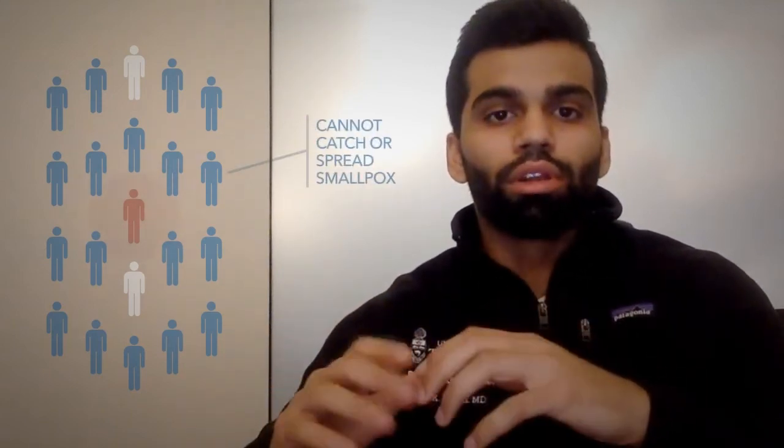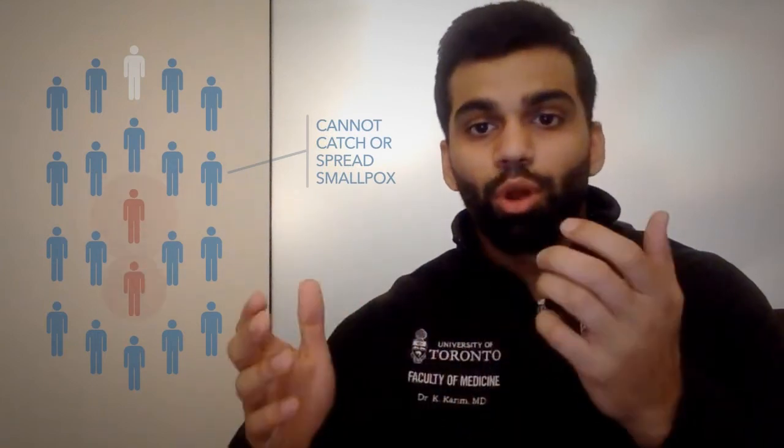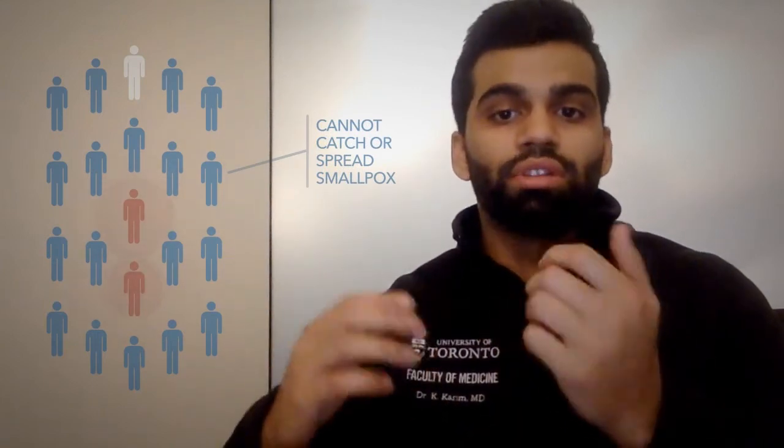Now imagine that the same community where the smallpox enters, but now the population of these individuals are vaccinated for this virus. Let's say about 95% of individuals. So the virus enters this community, but because the majority of those individuals are immune to that virus, not only will that virus not be able to spread, but rather it would be localized to one or two individuals that are immunocompromised such that they are the ones that are infected.